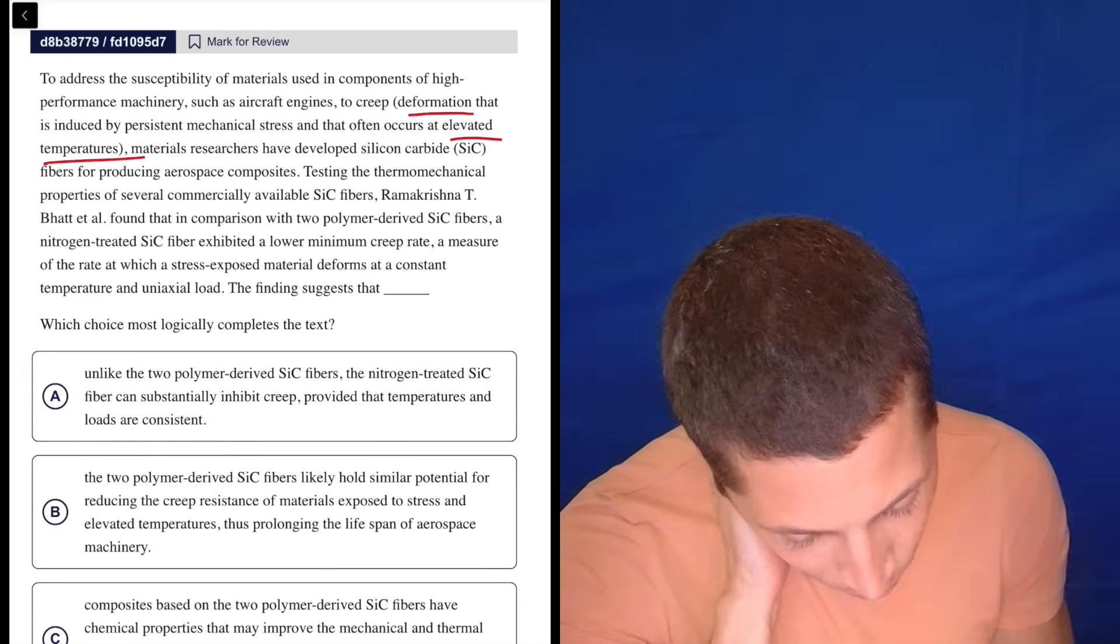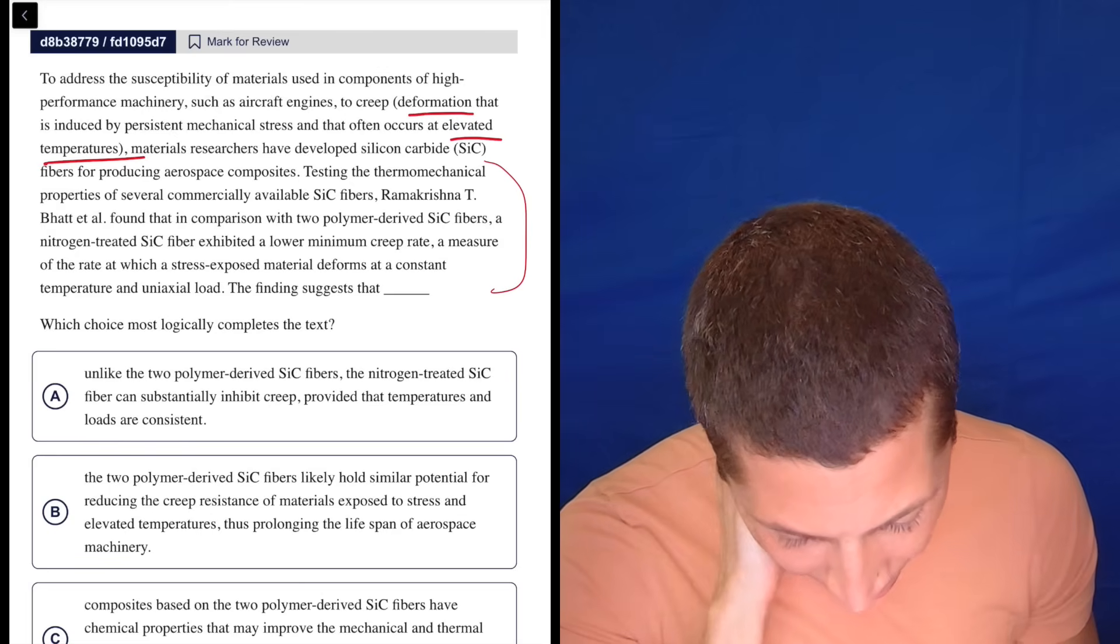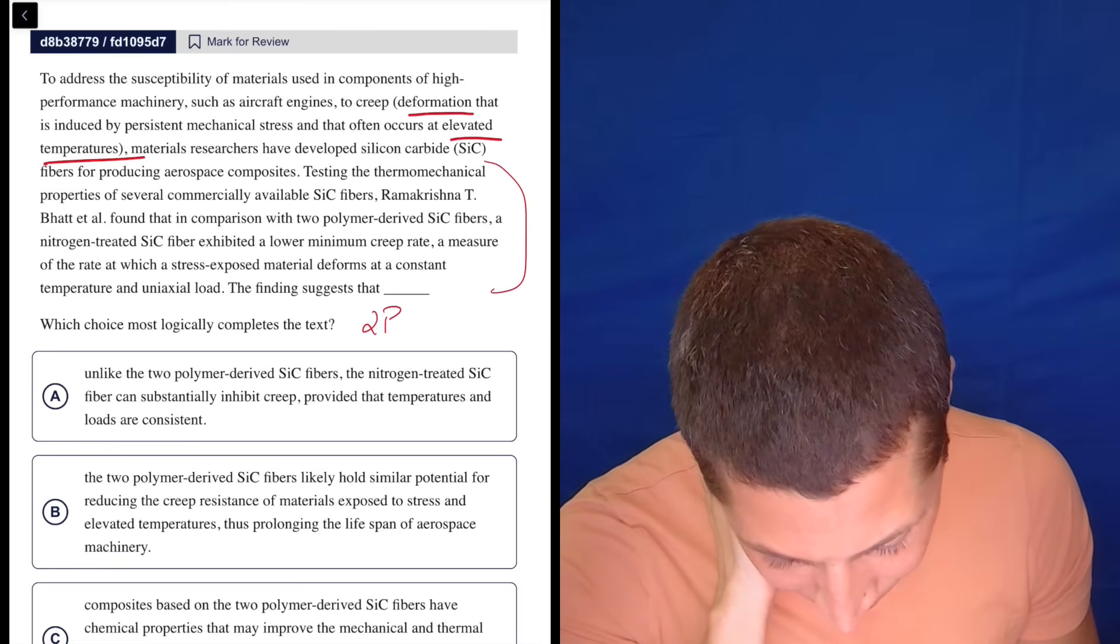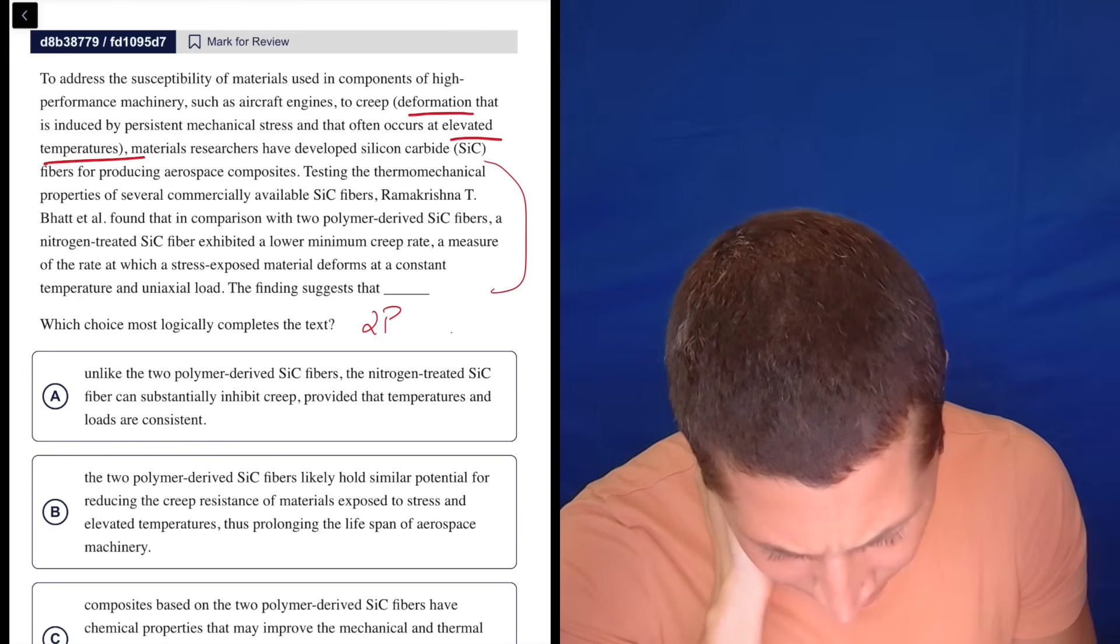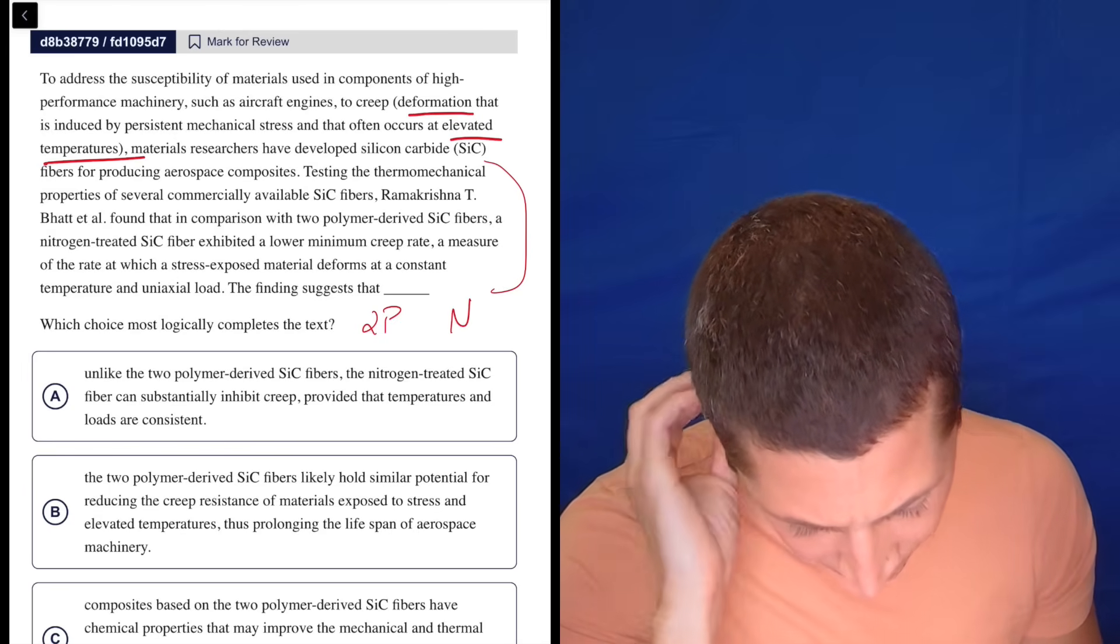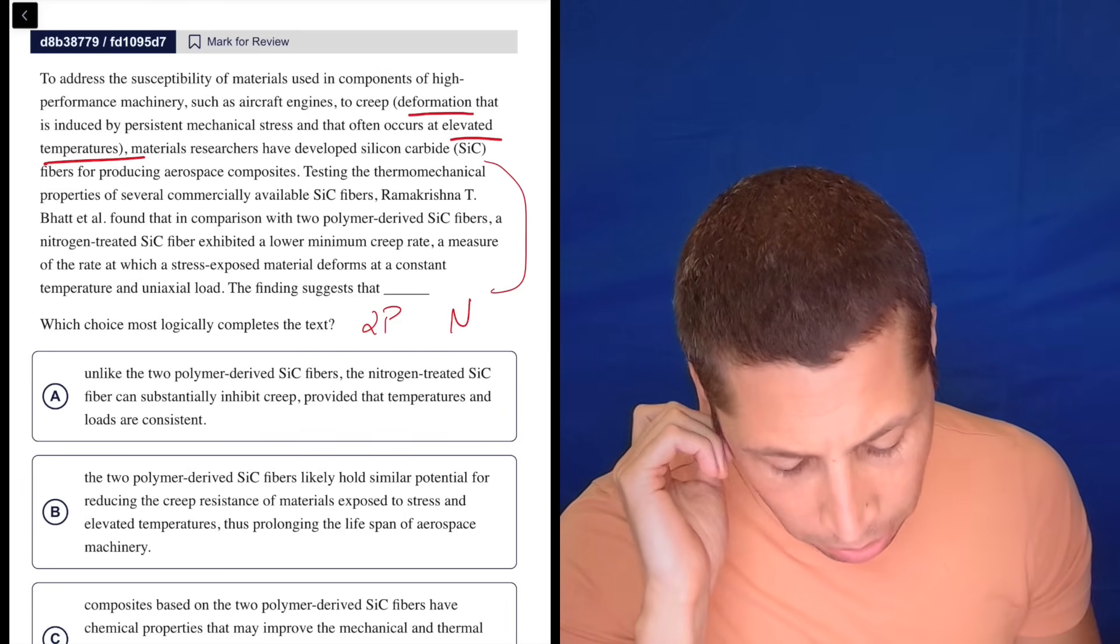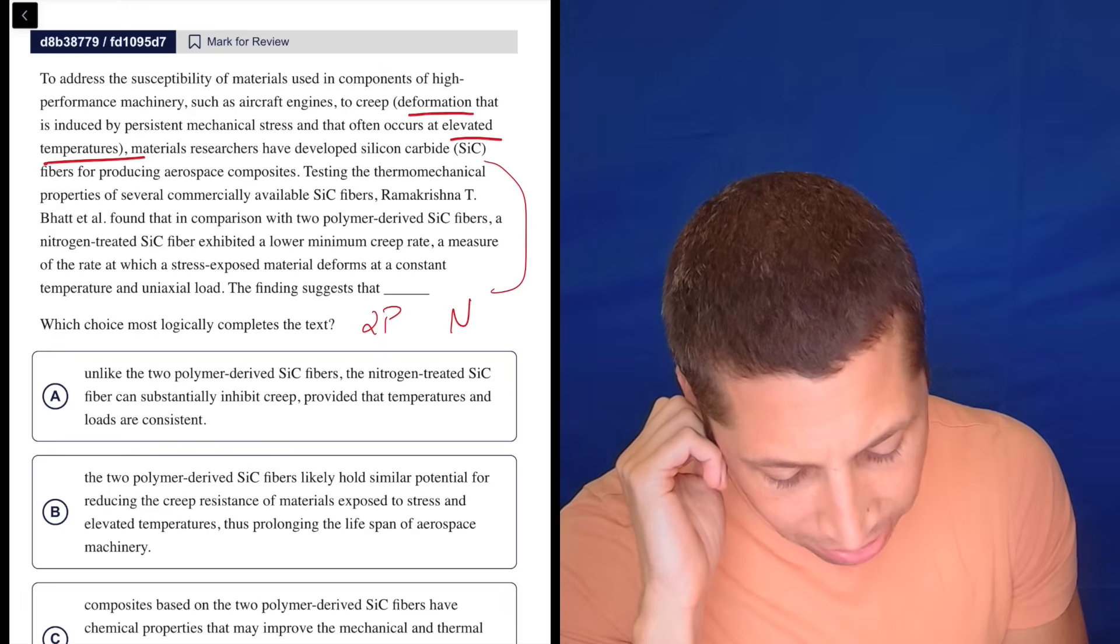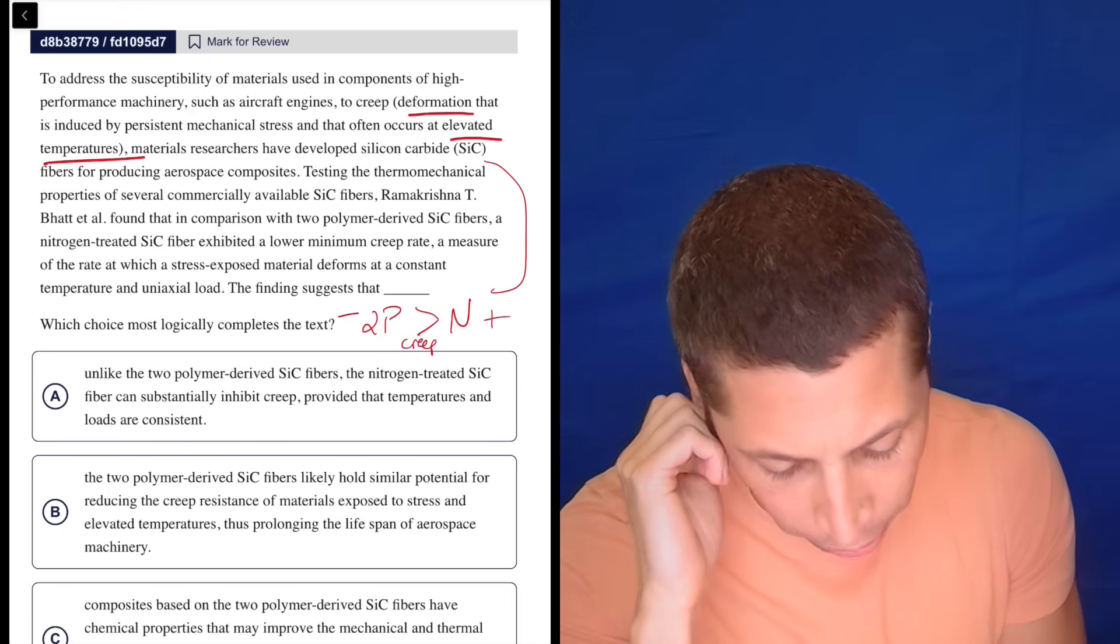So what they did—a comparison here. They found that the two polymer versus a nitrogen-treated one. Okay, so a nitrogen-treated SiC fiber exhibited a lower minimum creep rate. So that would mean less creep, but that also means that this one's better, right? Creep is bad.